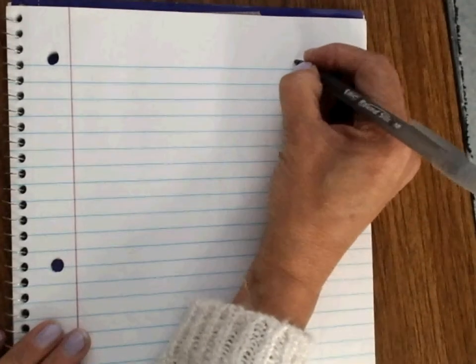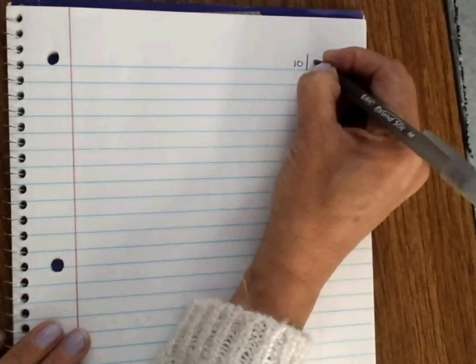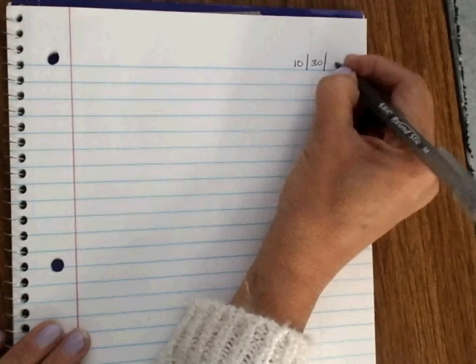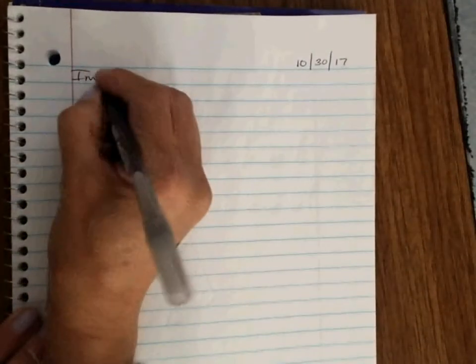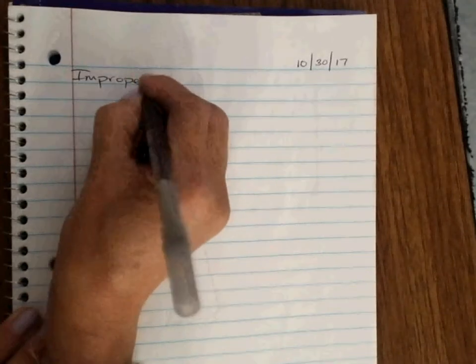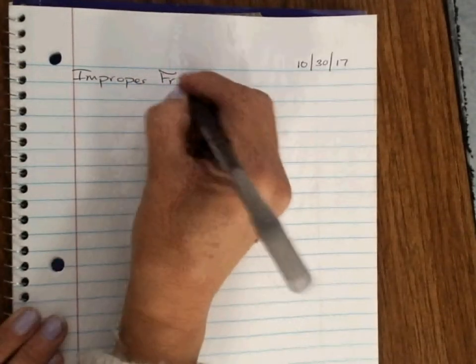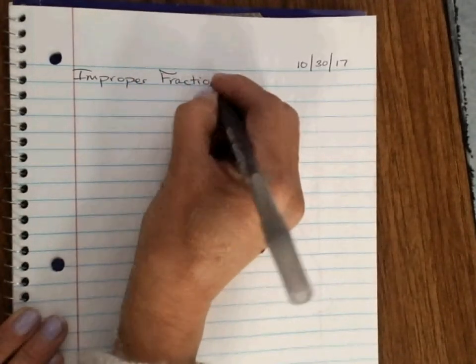Hello there class. We have a real super quick lesson here today that really is probably a review of something you've done in fourth grade. Let's see, today is the thirtieth. Okay, and it is on improper fractions and mixed numbers.